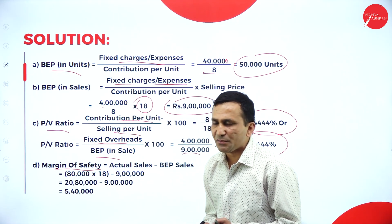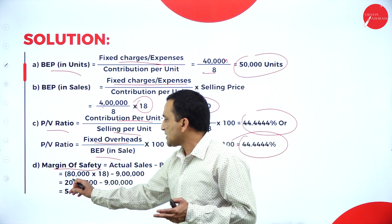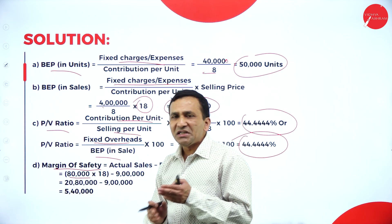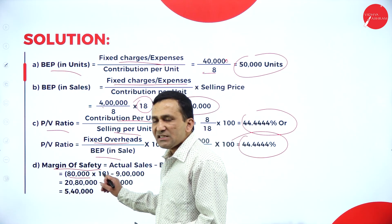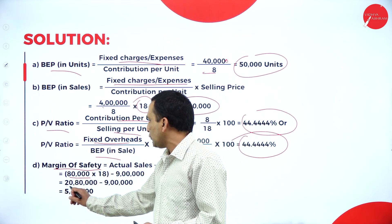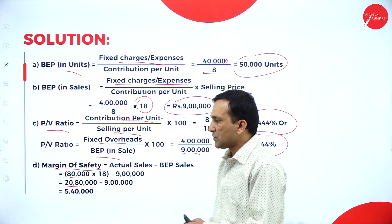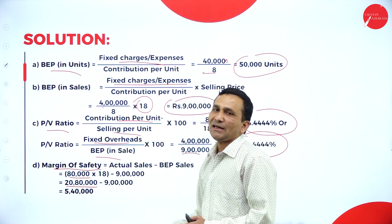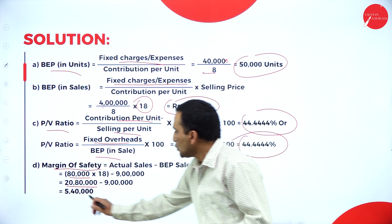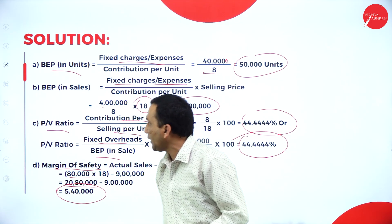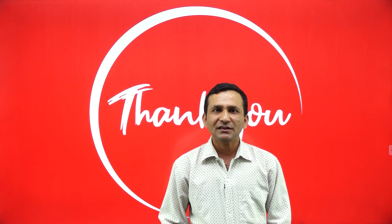Margin of safety for the 10% decrease scenario: actual sales = 80,000 units × ₹18 = ₹14,40,000. Subtract break-even sales of ₹9 lakh. Margin of safety = ₹5,40,000. Keep watching for the next section. Thank you.